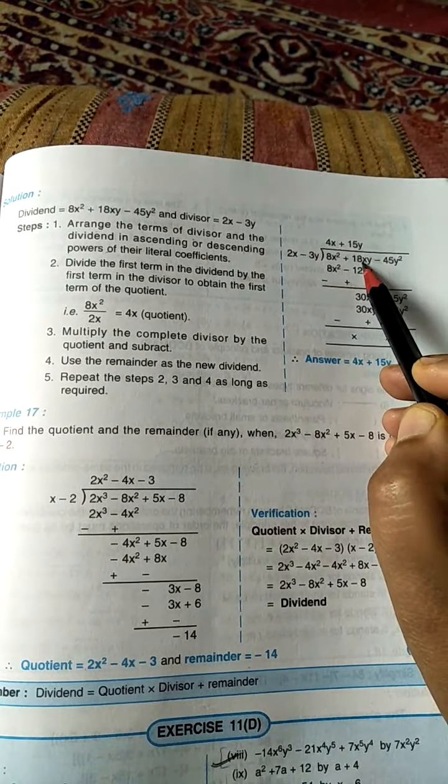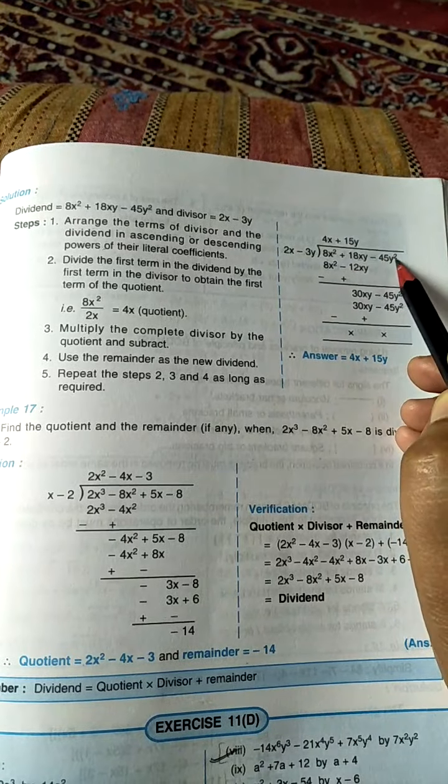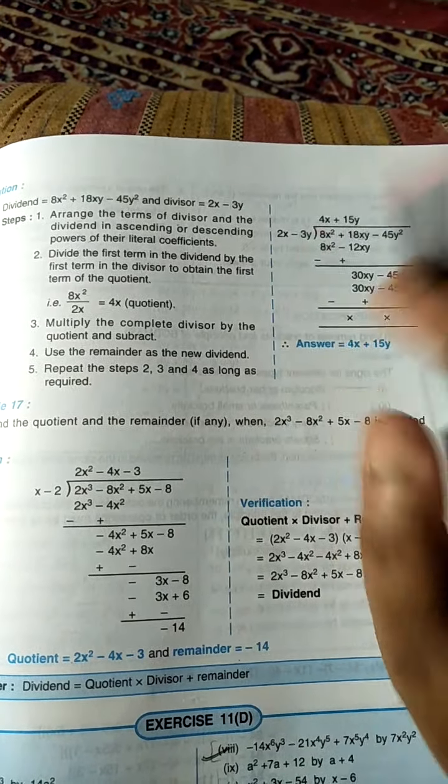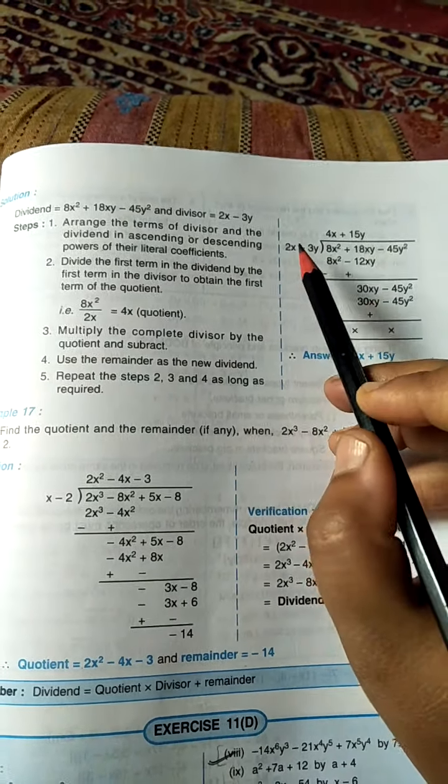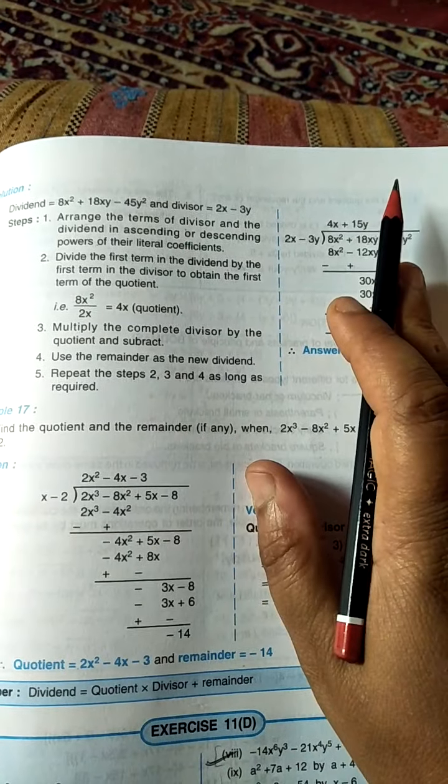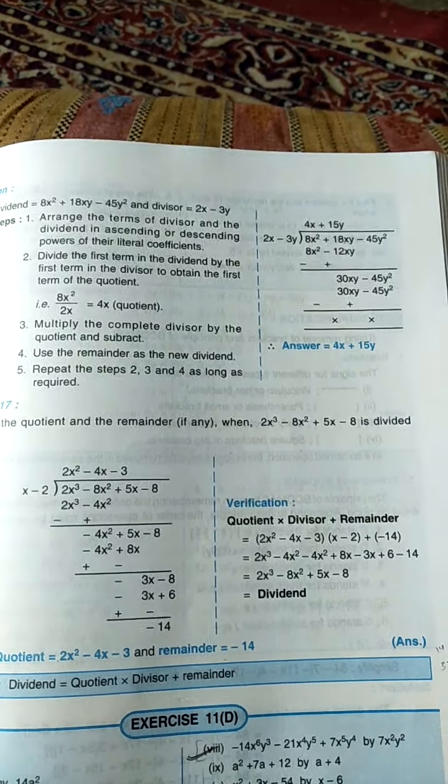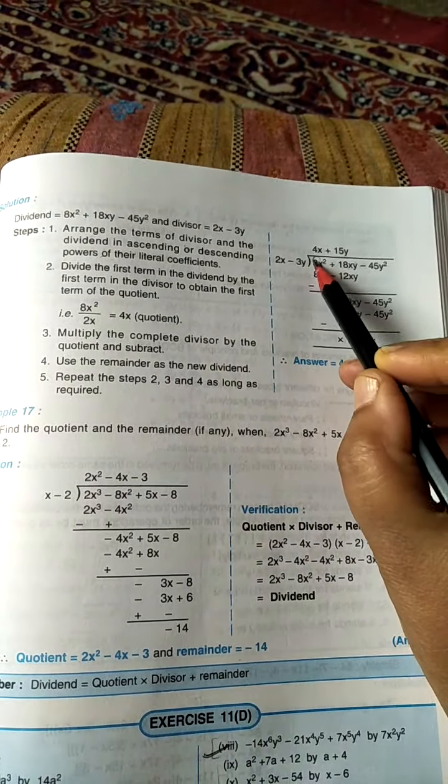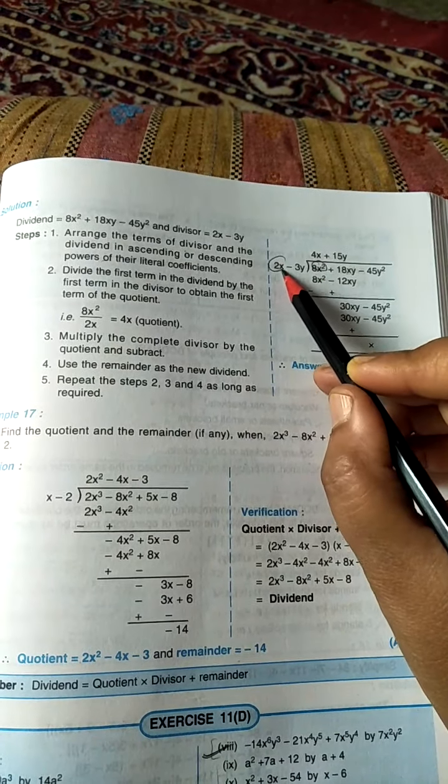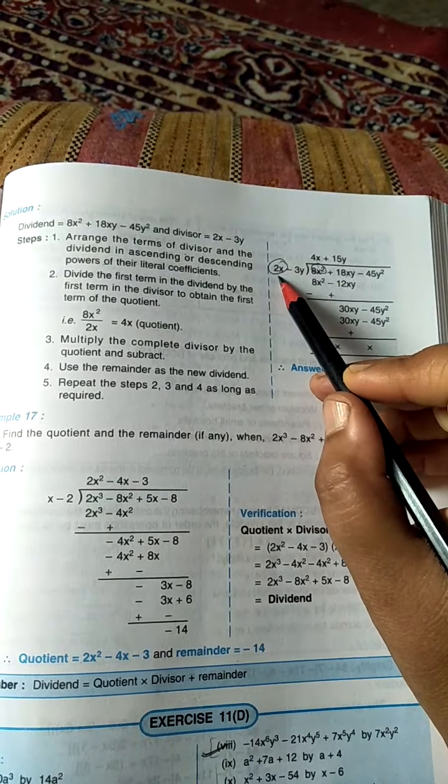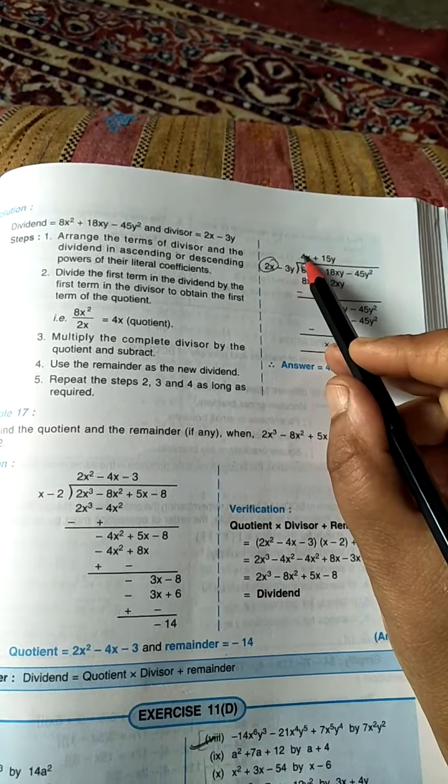This power is 2, here also the power is 2, and here also the power is 2. So they are arranged. Here is power 1, here is also power 1, they are arranged. Now divide the first term of the dividend by the first term of the divisor to obtain the first term of the quotient.